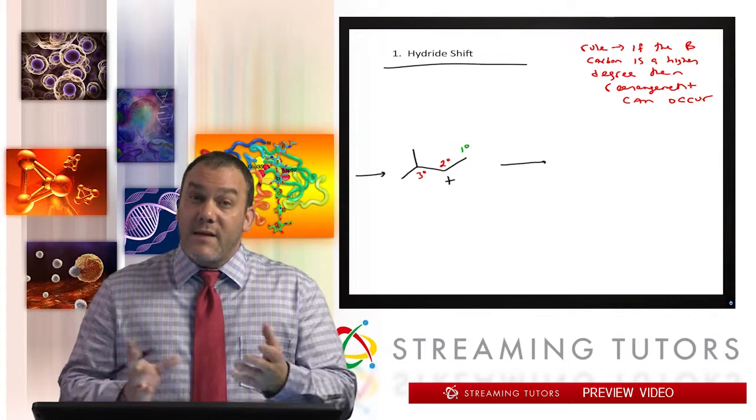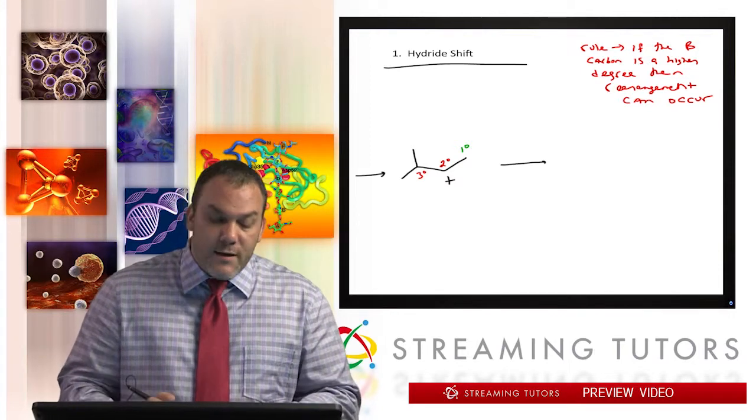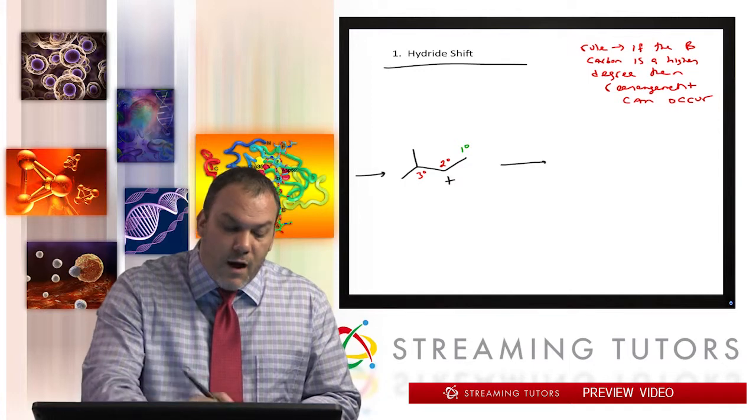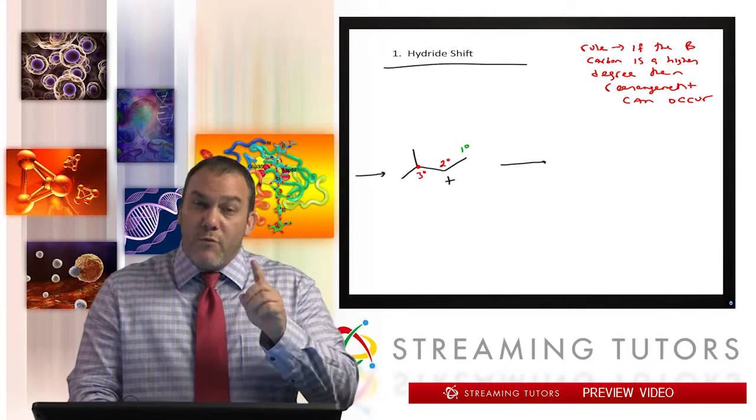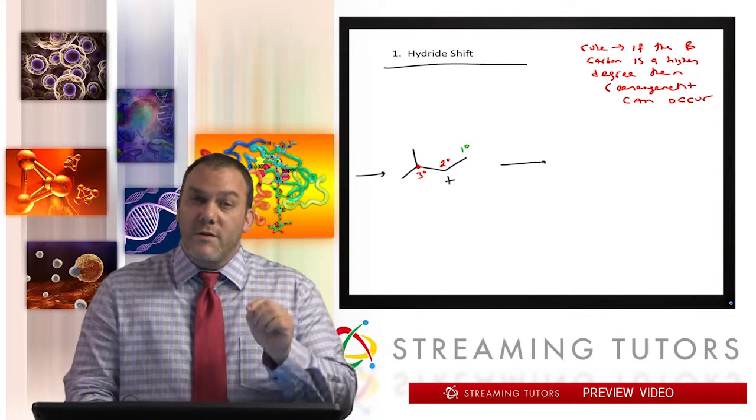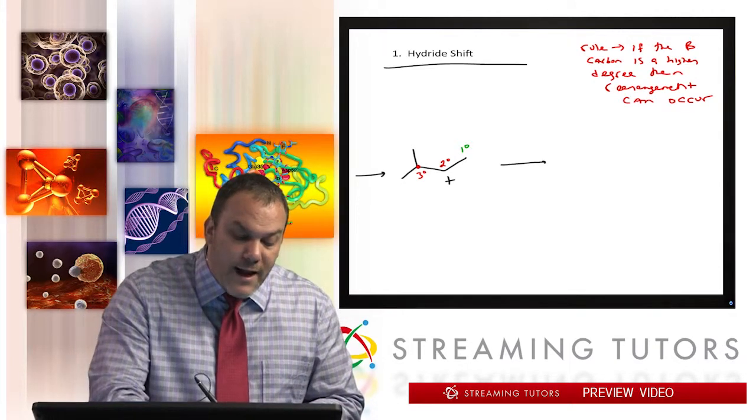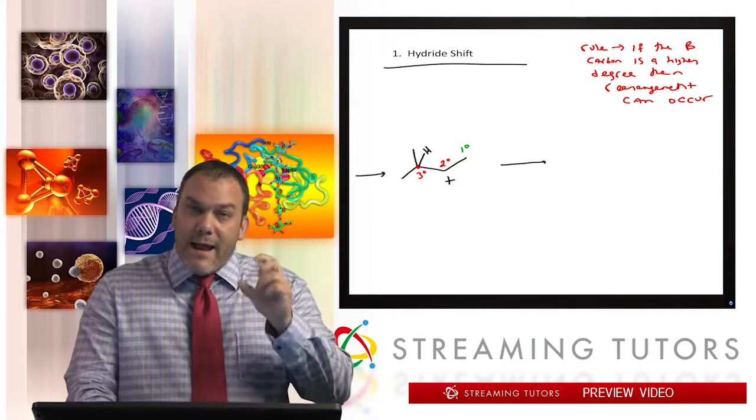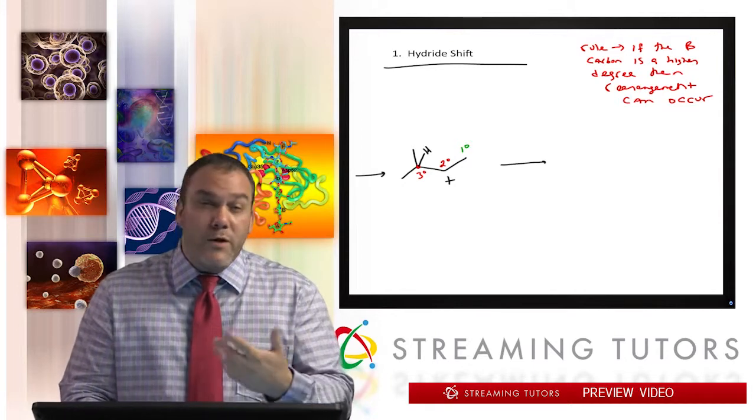For that reason, we're gonna do what's known as a hydride shift. Here's how it works: if the carbon that's higher degree, in this case tertiary, if it has a H, then we're gonna shift the H over to the carbon that's positive. The carbon that has the H that's higher degree, that H is gonna take the electrons away from carbon.